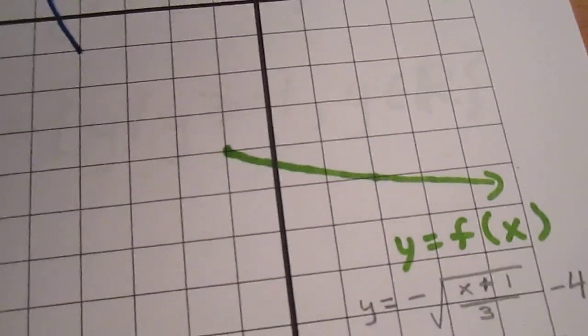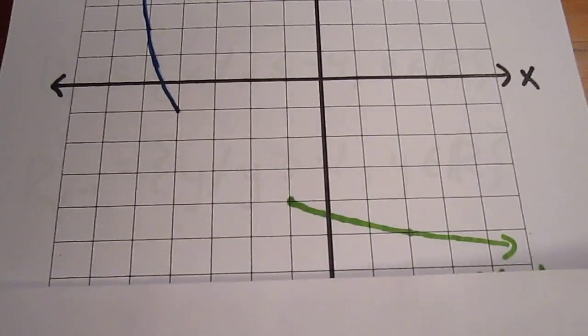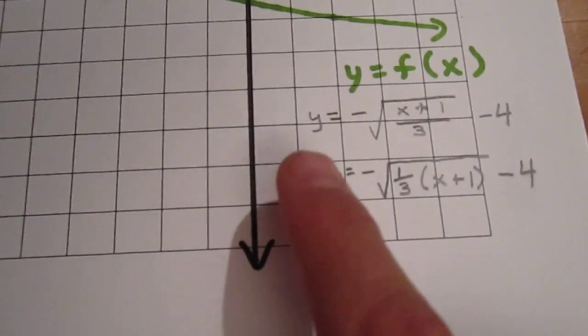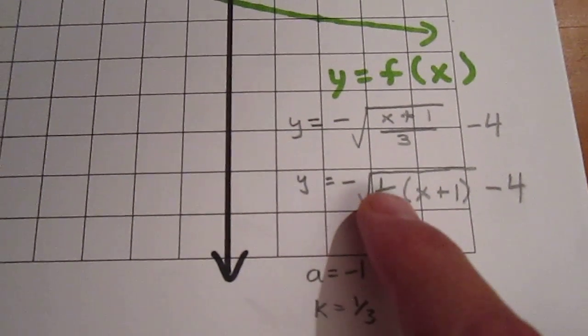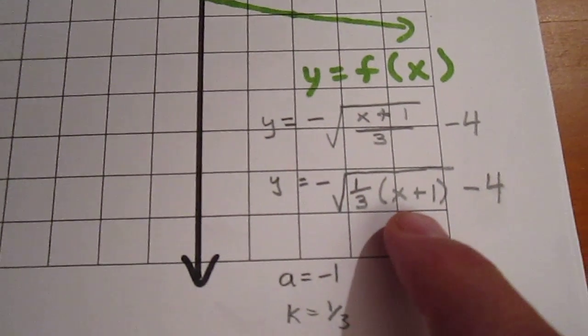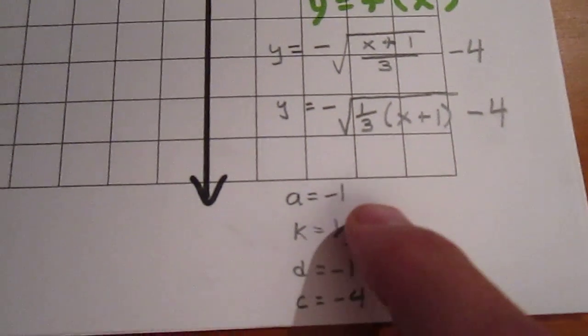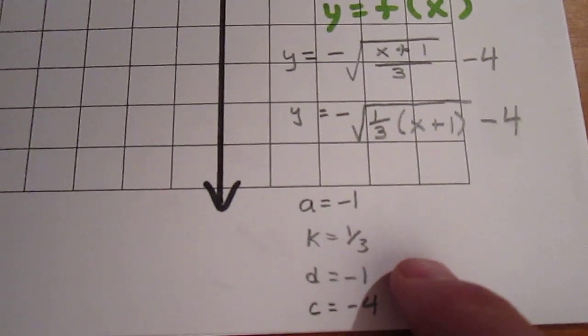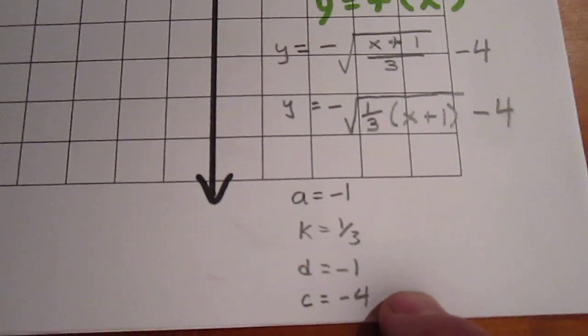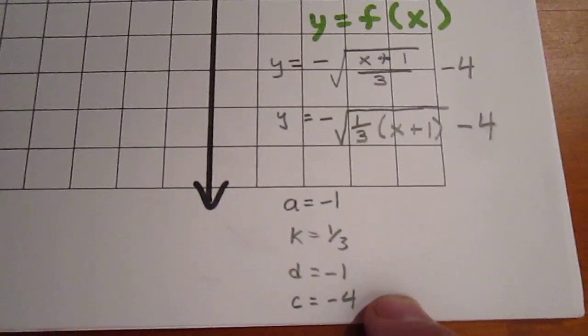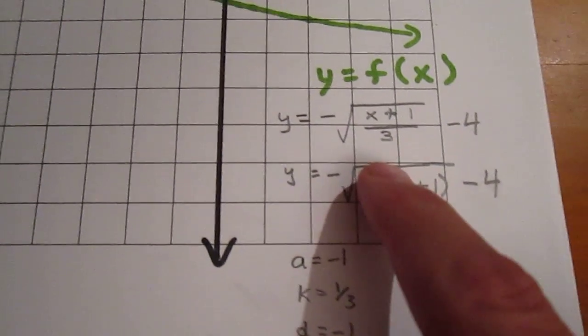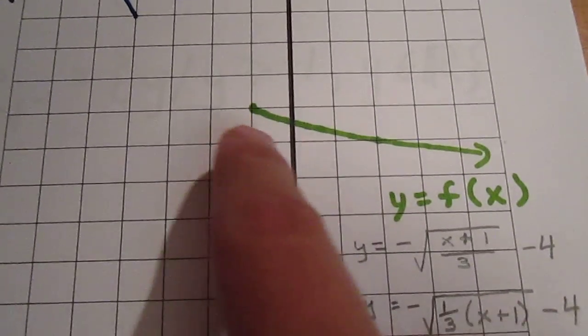Now if we were to look at the original curve, what we would have to do is think of it in terms of transformations. We would factor out a one-third. We would have x plus 1. So we would have an a value of negative 1, a k value of a third, a d value of negative 1, and a c value of negative 4. And we would put our parent function of y equals the square root of x through those transformations to get this green curve.